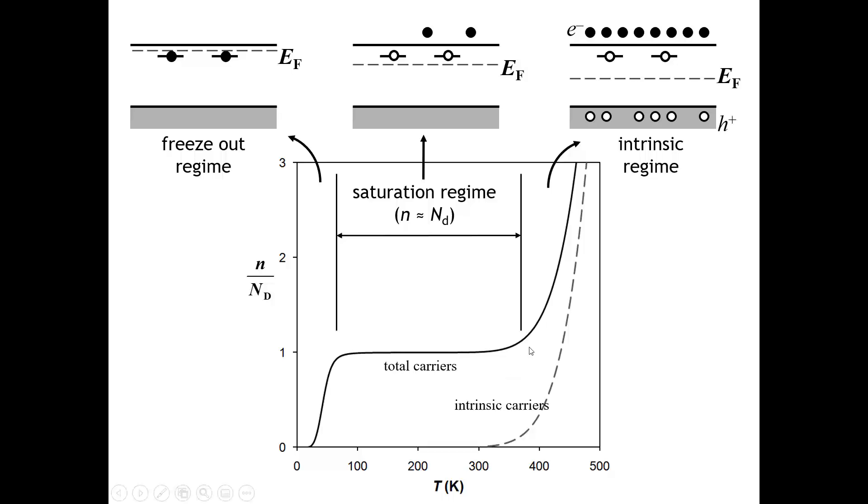Now, as you go to higher and higher temperatures, at some point, the intrinsic carriers that come when electrons have enough energy to be excited from the valence band into the conduction band start to dominate. And then you get into what's called the intrinsic regime.